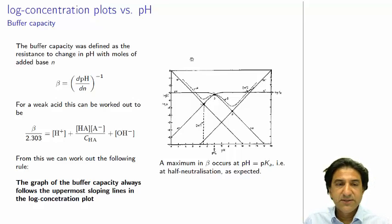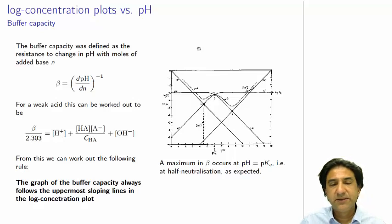We can also do another thing with these log concentration plots, and we can define something called the buffer capacity. We defined that before as the derivative of the alkalinity with respect to pH. Another way to define it is the resistance of the pH with respect to added base.